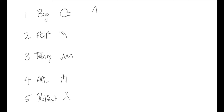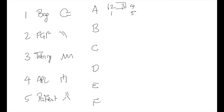After this, label the Mapleson circuits from A to F. Mapleson A will follow the numbers in order from 1 to 5. B, being the second letter, will require you to swap positions 2 and 3 around.